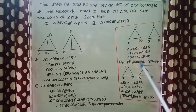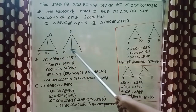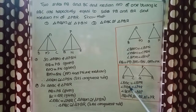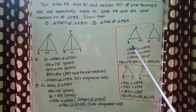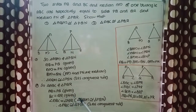From the congruent triangles, angle ABM equals angle PQN. Now, angle ABM is the same as angle ABC, and angle PQN is the same as angle PQR. So angle ABM equals angle PQN means angle ABC equals angle PQR. So our third condition is angle ABC equals angle PQR. Thus we have two sides and one included angle, and we can conclude triangle ABC is congruent to triangle PQR by the SAS congruence rule.